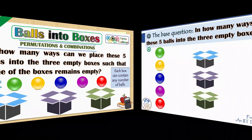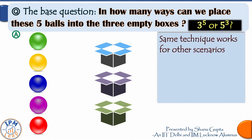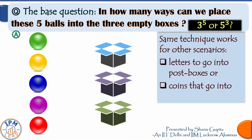Let's begin. Before attempting the question on the title screen, I want you to guess the answer to this simpler base question: in how many ways can we place these five balls into the three empty boxes, where you may place the balls any way you wish — you may even place all balls into any one box and leave the other two boxes empty. In this base question we have done away with the constraint that none of the boxes should remain empty. This is a classic question in PNC which can be asked in so many other ways — for instance, posting some letters into post boxes or putting some coins into the pockets of your coat. The same technique works for all such scenarios.